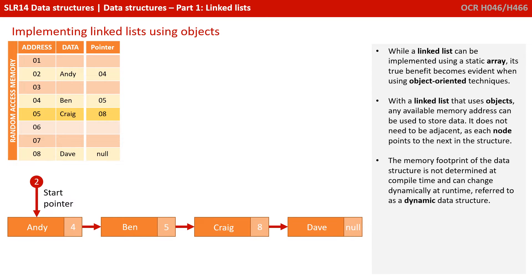While a linked list can be implemented using a static array, its true benefit becomes evident when using object-oriented techniques. With a linked list that uses objects, any available memory address can be used to store data. It does not need to be adjacent as each node points to the next in the structure. The memory footprint of the data structure is not determined at compile time and can be changed dynamically at runtime, referred to as a dynamic data structure.